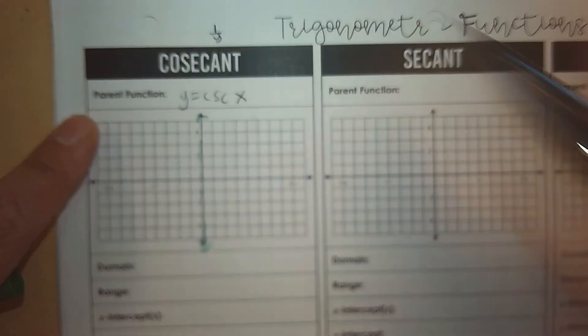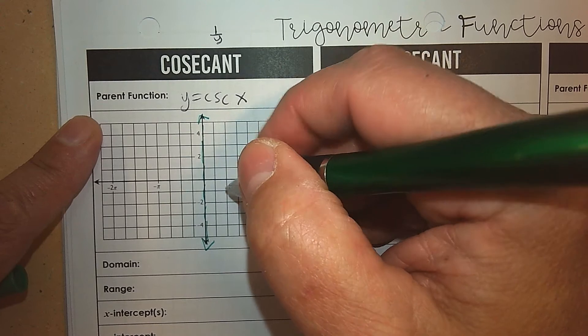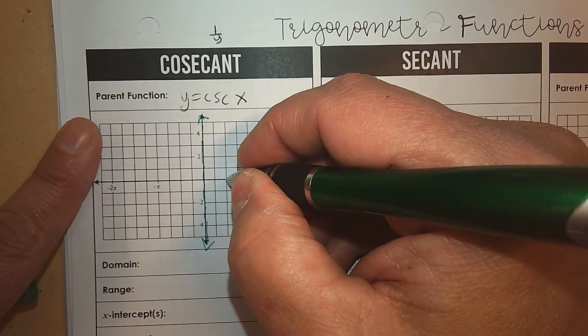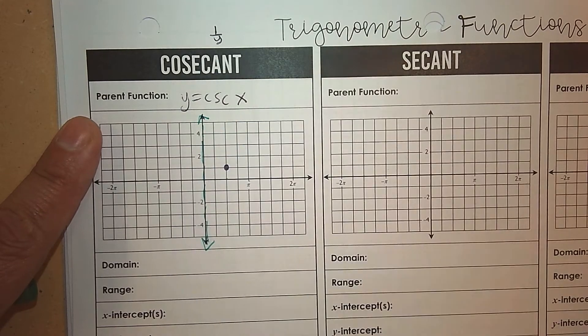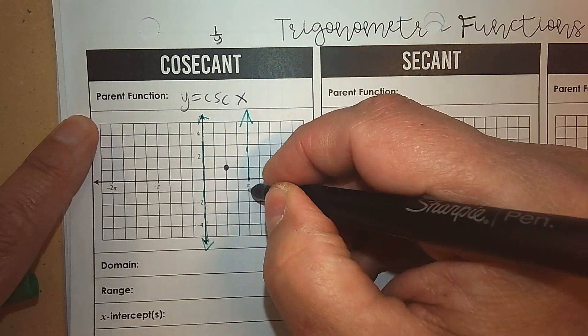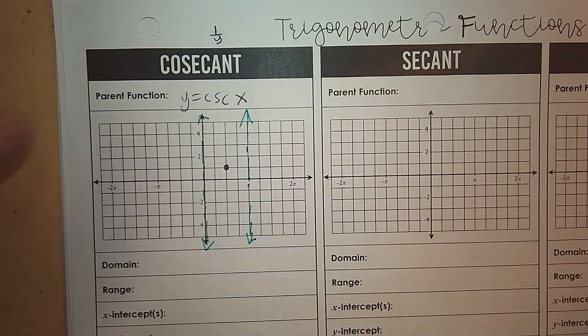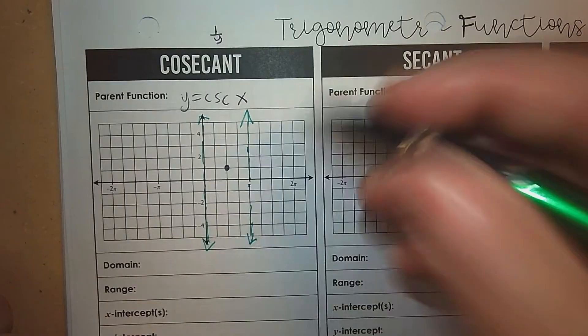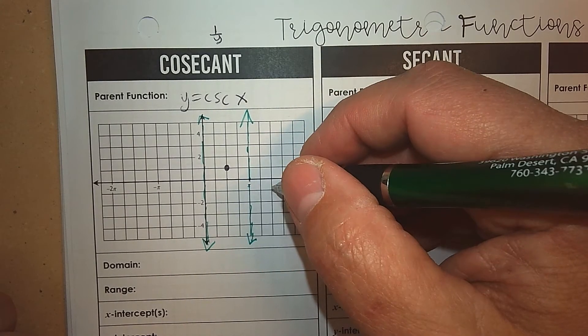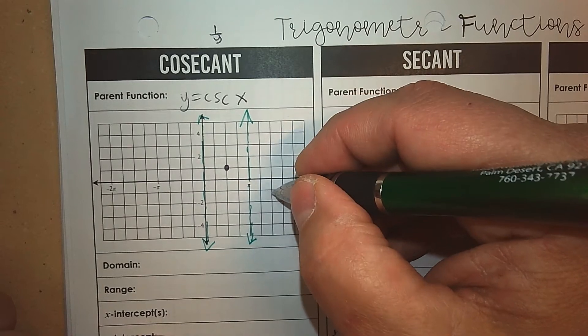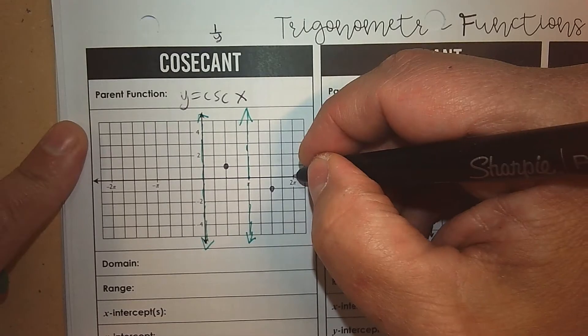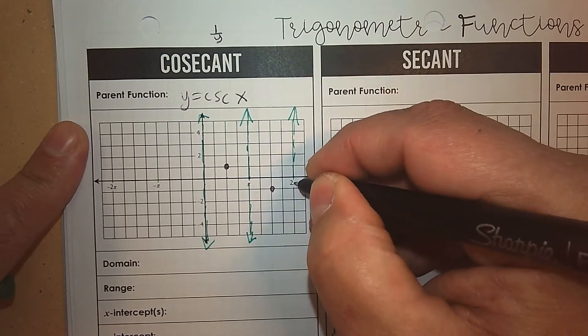And then we look at 90 degrees or pi over 2, and there it's 1, and the reciprocal of 1 is 1. And then at pi, again, it's undefined because the reciprocal of zero. At 3 pi over 2, or at the bottom of the circle, it is negative 1, and the reciprocal of negative 1 is negative 1. And then back to 2 pi or zero, it's an asymptote. So here's a pattern.